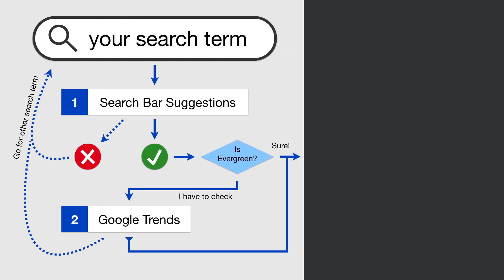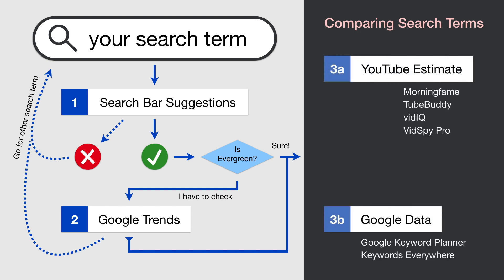Next up is using one of the additional tools to make your final decision. At this point you have multiple search terms that you consider targeting — but which search term should you choose? Which type of tool should you use: the ones that estimate search volume on YouTube, or the ones that give you actual search volume on Google? Well, it depends on your niche. Do you believe that the search behavior for your niche is the same on YouTube and Google? If yes, use one of the Google-based tools. If no or when in doubt, use one of the YouTube estimate tools. It's a mess with so many different tools, but I also wish there was one tool with actual search volume for YouTube — since there is none, we work with what we have.